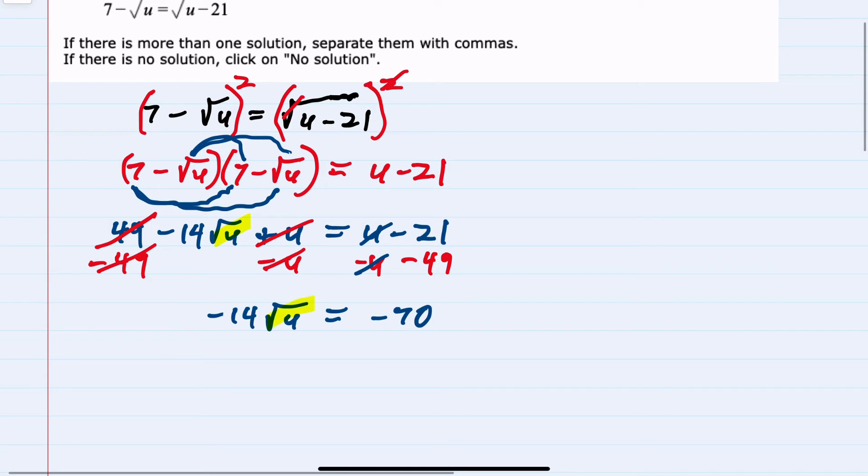Continuing to solve for the radical, I would need to divide by negative 14 on both sides, giving me the square root of u equals, the negatives cancel, and 70 divided by 14 is 5.